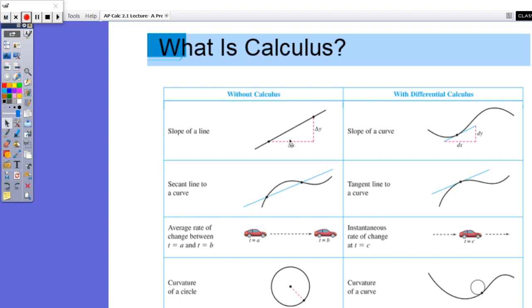The secant line of a curve versus the tangent line of a curve. The average rate of change versus the instantaneous rate of change—figuring out how fast a car is traveling at a specific moment in time. Let's see if there are some other ones here.